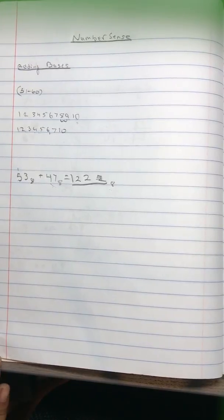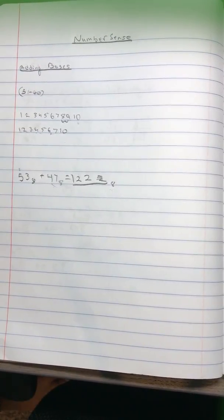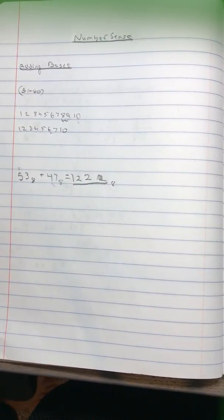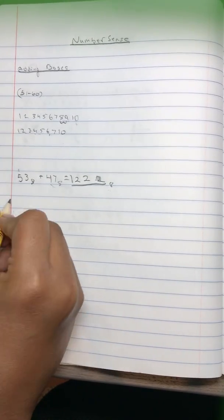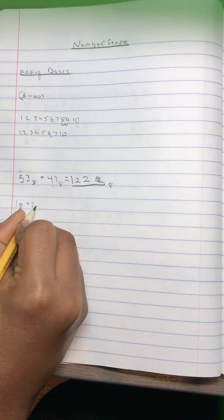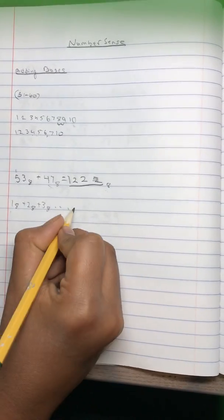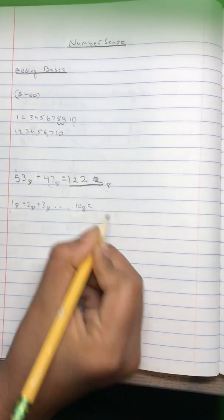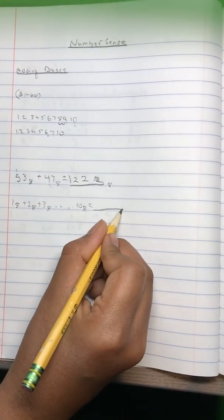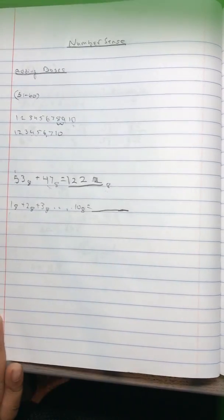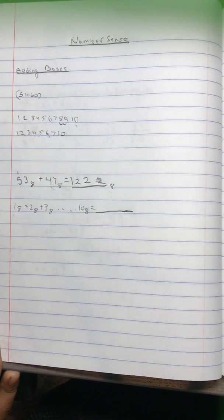Another thing that also comes up is consecutive bases. Like they say 1 base 8 plus 2 base 8 plus 3 base 8, and they say that all the way to 10 base 8. They don't give really high numbers for consecutive numbers in other bases, but what you have to do with this...